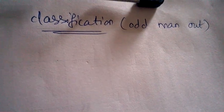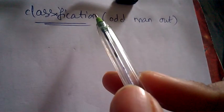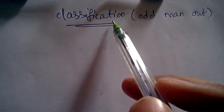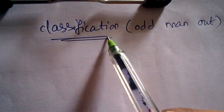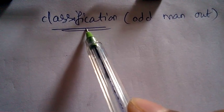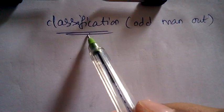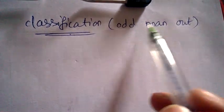Hello friends, welcome back to Best Way to Study. This is the second tutorial in CRT Verbal and Non-Verbal Reasoning. Let's start with classification. Classification questions will also appear under reasoning. Classification is also called 'odd man out' or 'odd one out.' Let's look at examples so you can easily understand what classification is.